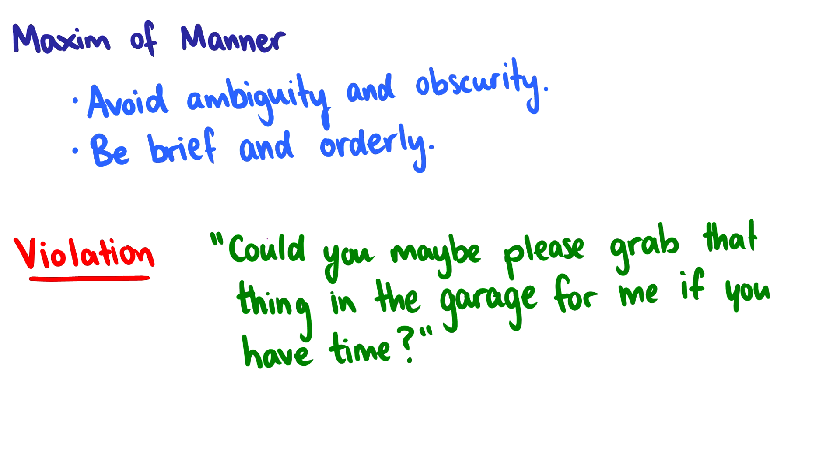So if we say something like, could you maybe please grab that thing in the garage for me if you have time? Oh, we have a huge violation here. So for instance, according to the maxim of manner, we shouldn't say maybe because that's unnecessary. That's not being brief. I already said could you? I don't need please because why would I need please? That's unnecessary. That thing in the garage. Okay, this is not specific enough. For me, this is probably necessary information because I'm explaining why I want it. And if you have time, well, this is unnecessary information because that's just being polite.